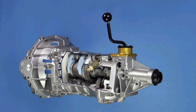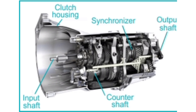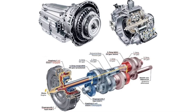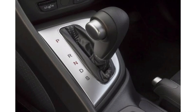Manual transmission, also known as a stick shift or standard transmission, is one of the oldest and simplest transmission systems in automobiles. In this system, the driver manually selects and engages gears using a gear shifter and clutch pedal. By disengaging the clutch, the driver can smoothly change gears to control the power sent from the engine to the wheels. Manual transmission gives drivers a high degree of control over their vehicle but requires more skill and effort to operate effectively.